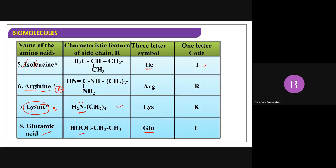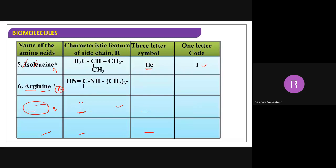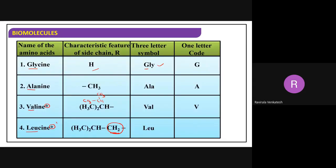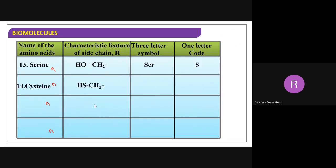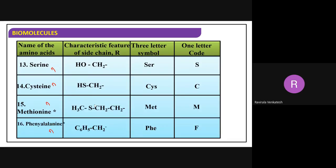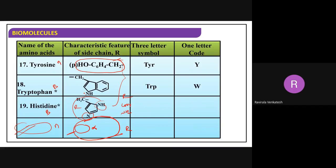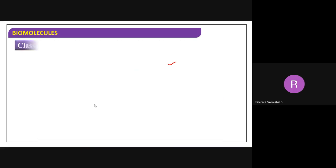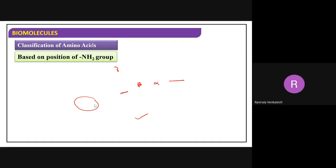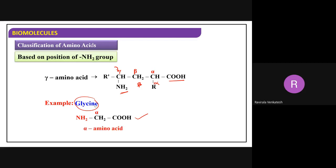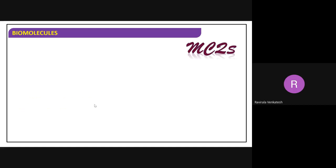So, lysine - basic. Valine - neutral. Alanine - neutral. Glycine - neutral. In examination, they don't give the structure, so what you do is write the acidic amino acids separately, write the basic ones separately, and the remaining will definitely be neutral. There are about two acidic, three or four basic, and the remaining twelve or thirteen are neutral.